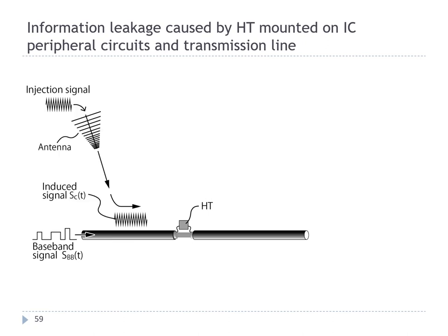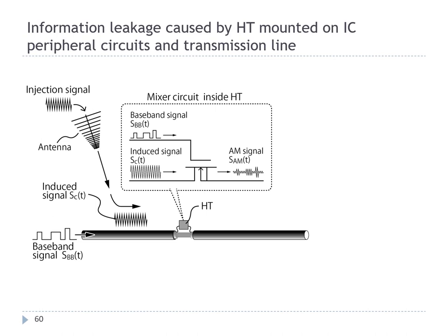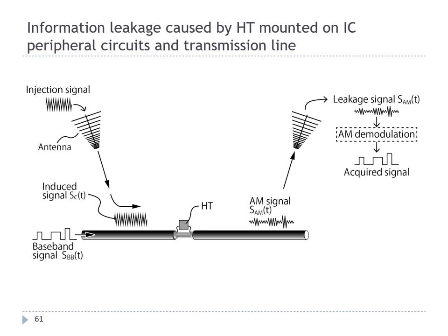Intentional electromagnetic interference is performed against the cable containing the hardware trojan. Disturbance waves are induced on the cable, propagated to the hardware trojan, and drive it. Under this situation, the hardware trojan modulates the target electrical signal using the induced signal as a carrier frequency. The demodulated signal is re-emitted using the cable as an antenna, and information can be acquired by demodulating it outside the equipment.